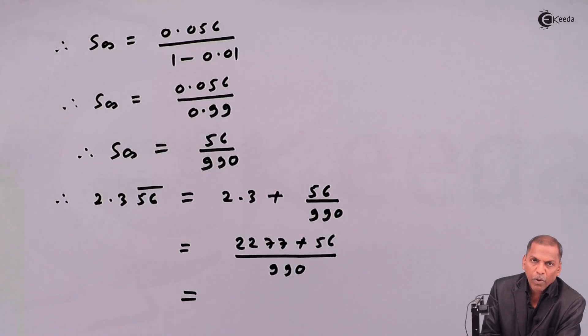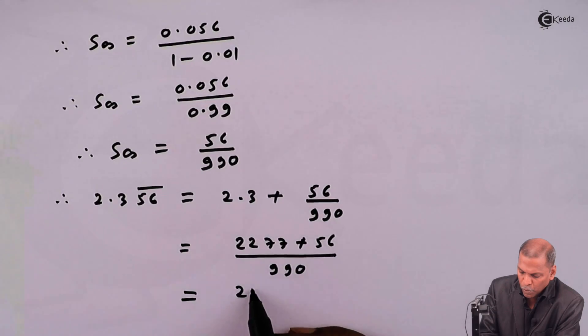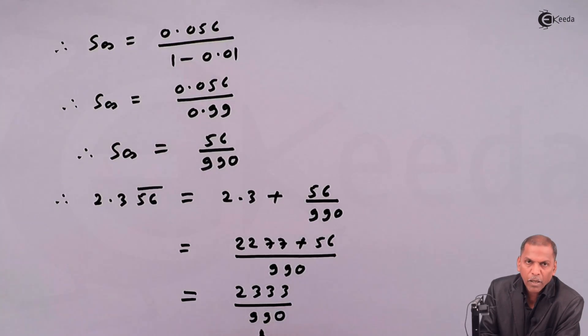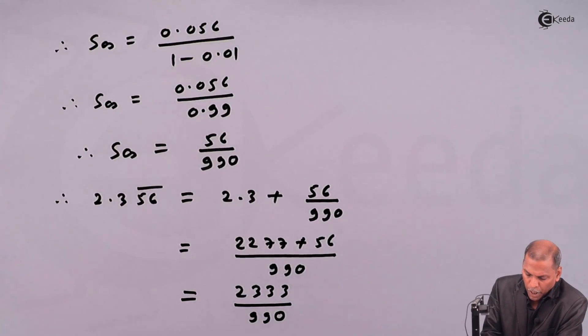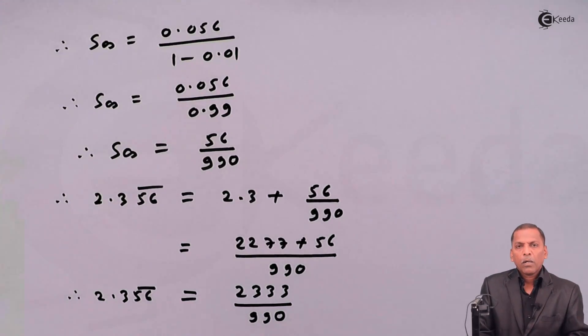And that is equal to 2277 plus 56 we get 2333 divide by 990. It means the given number 2.356 bar can be expressed as 2333 upon 990. Now this is a required solution for the given problem. Thank you.